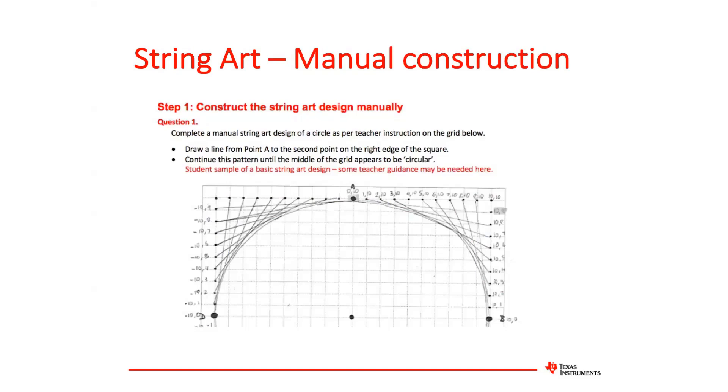So I would give them a grid and on this grid I'd ask them to locate an origin for a Cartesian plane and then to mark some points on the outside of that grid and then to join lines to simulate a simple String Art design as the one that's shown there.